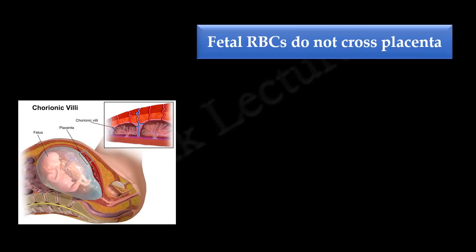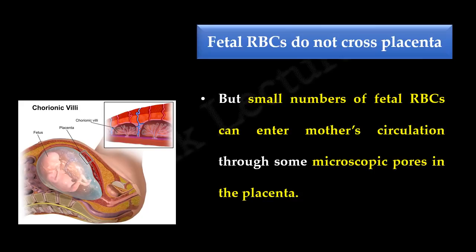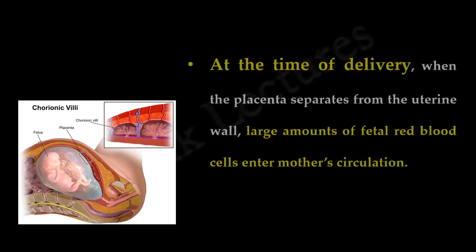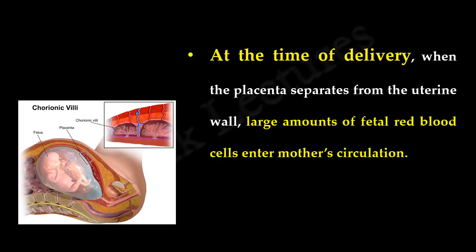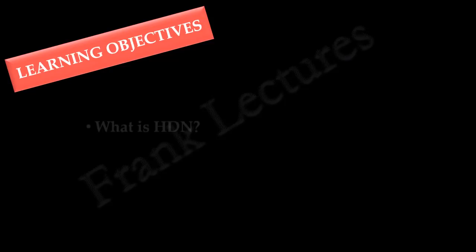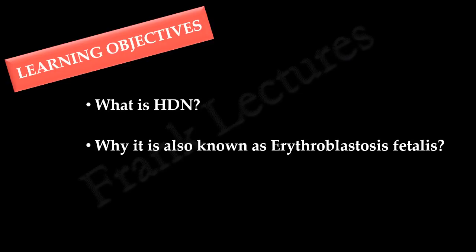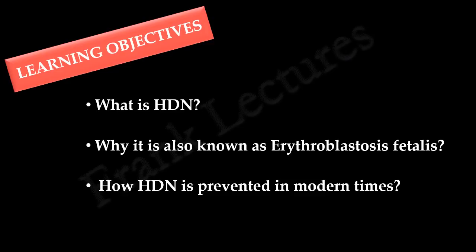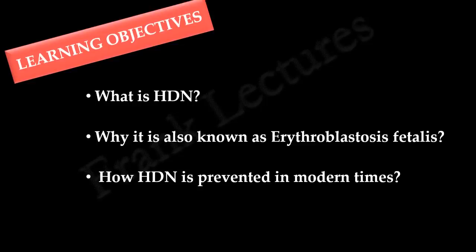Although fetal RBCs do not normally cross the placenta, small numbers of fetal RBCs can enter the mother's circulation through microscopic pores in the placenta. At the time of delivery, when the placenta separates from the uterine wall, large amounts of fetal red blood cells enter the mother's circulation. In this video lecture, we will understand what hemolytic disease of the newborn is, why it is also known as erythroblastosis fetalis, and how this disease is prevented in modern times.